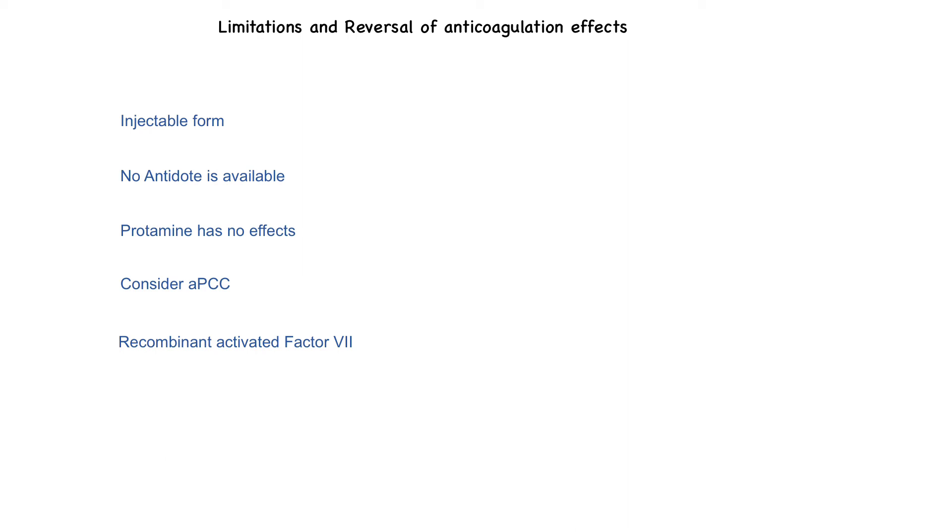Although fondaparinux can be given once daily due to its long half-life, there is no specific antidote for it. So in case of bleeding or if a procedure is required, there is no specific agent that can reverse its effects. The incidence of heparin-induced thrombocytopenia with fondaparinux is extremely low; however, if rapid reversal of anticoagulation is required, we can consider activated prothrombin complex concentrate or recombinant activated Factor 7.